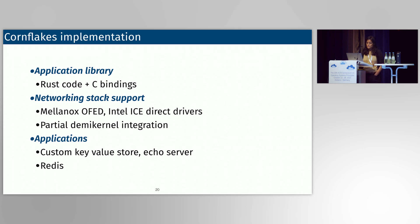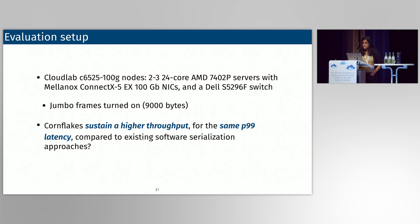The Cornflakes implementation involves an application library that generates Rust code and C bindings. We currently support the Mellanox OFED and Intel ICE drivers and have a partial integration with Demikernel. We support a custom key-value store and echo server used to compare against other general-purpose serialization libraries, and we've integrated Cornflakes inside Redis to replace Redis serialization. We evaluated on CloudLab with JumboFrames enabled, so the maximum packet size was about 8,000 bytes.